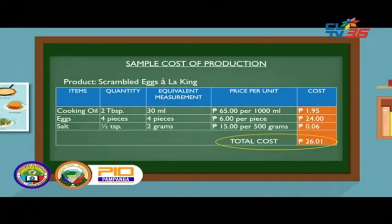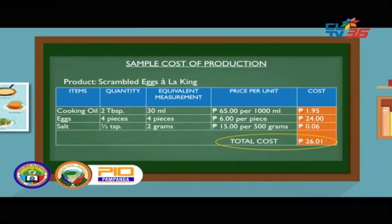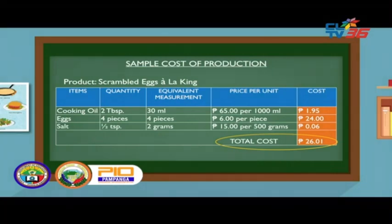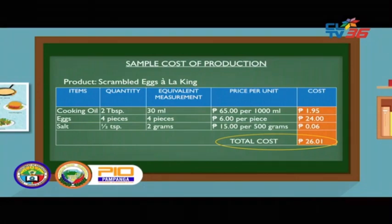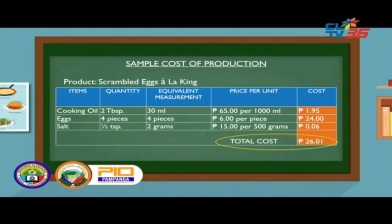Therefore, the total cost of 30 ml of cooking oil is 1 peso and 95 centavos. For the computation of the cost for eggs and salt, follow the steps you used in computing the cost of cooking oil. To get the total cost for this recipe, simply add the cost of each item. For cooking oil, the cost is 1 peso and 95 centavos. For the eggs, the cost is 24 pesos. And for the salt, the cost is 6 centavos. Therefore, the total cost is 26 pesos and 1 centavo.